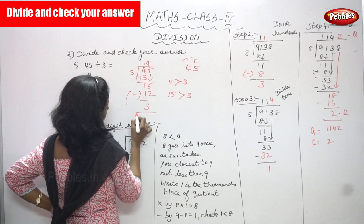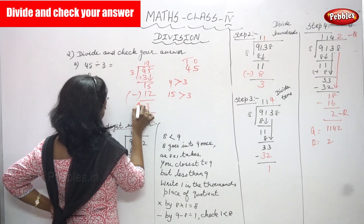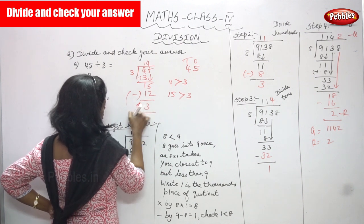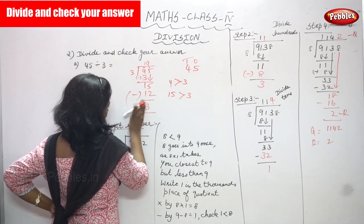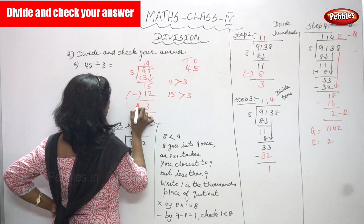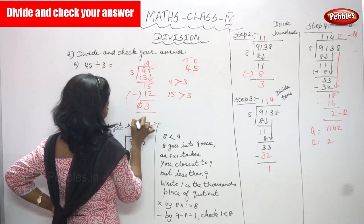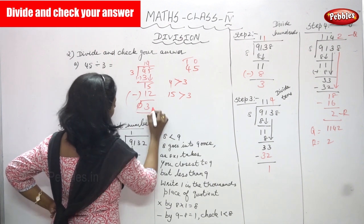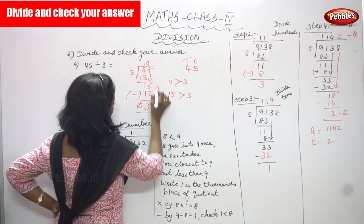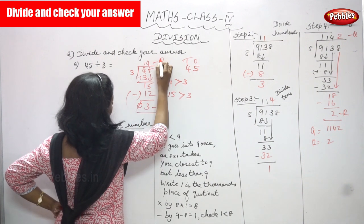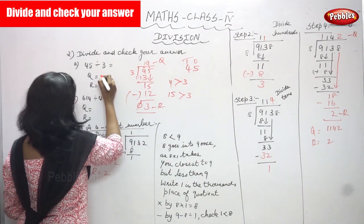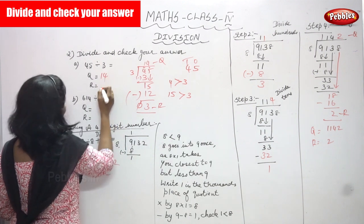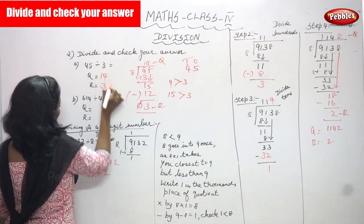5 minus 2 gives 3 and 1 minus 1 gives 0. The zero is cancelled. So the remainder is 3 and the quotient is 14.